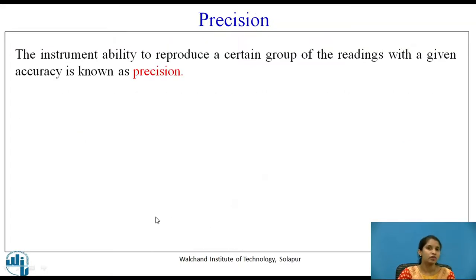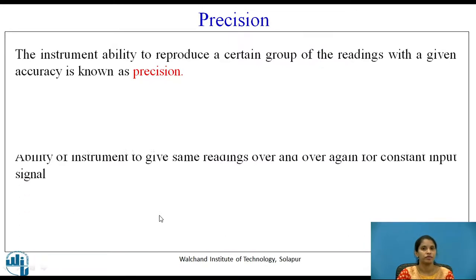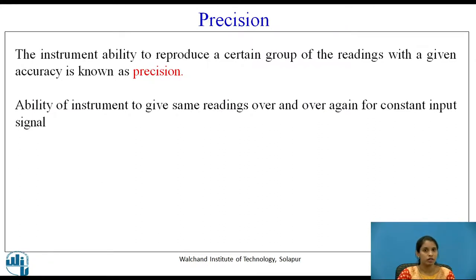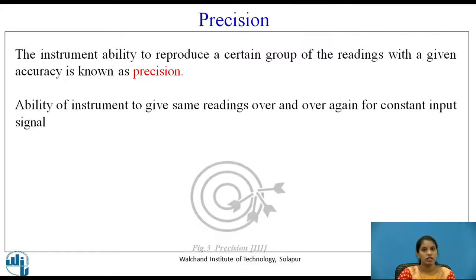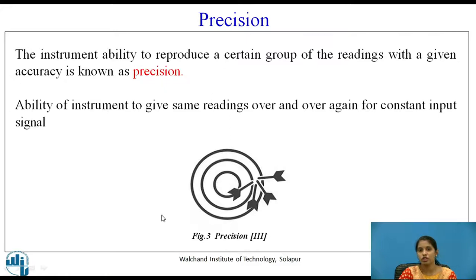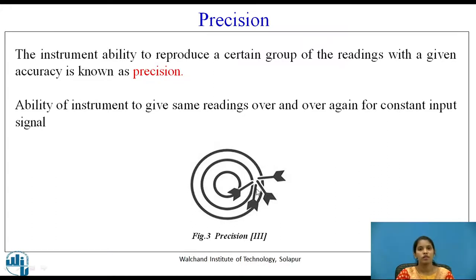The instrument's ability to reproduce a certain group of readings with accuracy is known as precision. Ability of an instrument to give the same readings over and over again for a constant input signal is known as precision. Figure 3 shows an example of precision — all the arrows are struck on a particular area, so these readings are said to be precise readings.